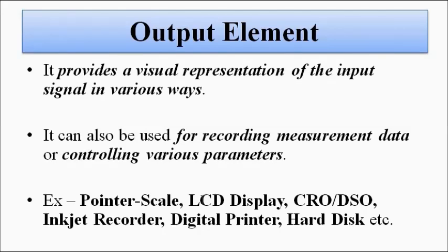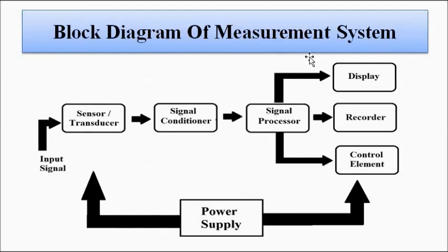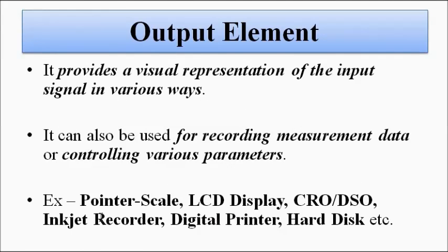The output element can also be used for recording the measured data for future reference, and for employing control mechanisms — especially in process control, industrial instrumentation, and automation. Examples of output elements include the pointer-and-scale arrangement, LCD display, cathode ray oscilloscope, digital storage oscilloscope (DSO), inkjet recorder, digital printer, and hard disk for storage and recording. Various types of actuators can also be used for employing control mechanisms.